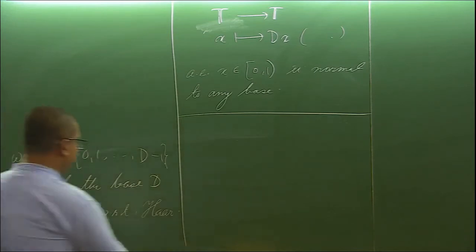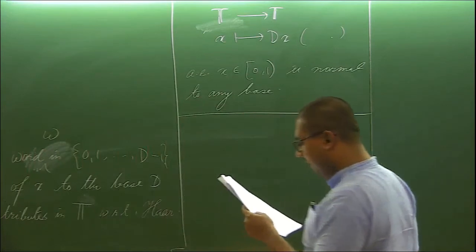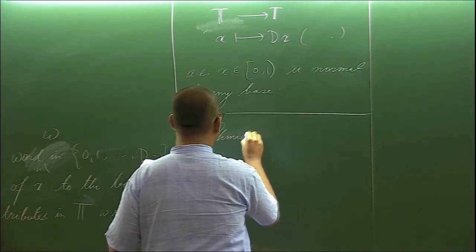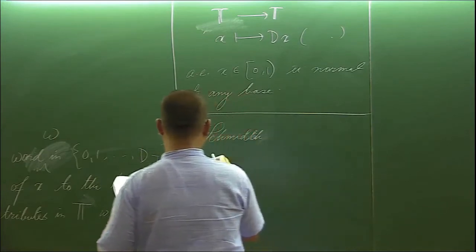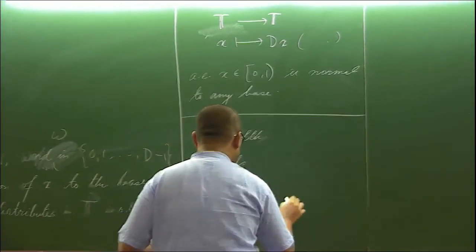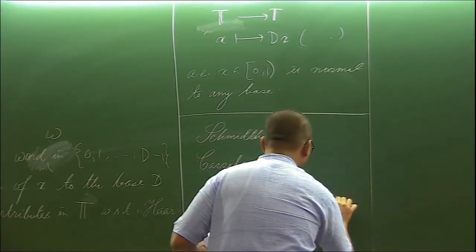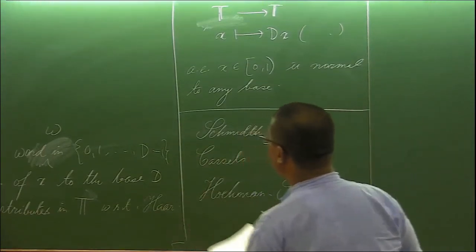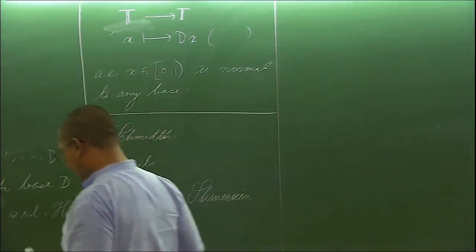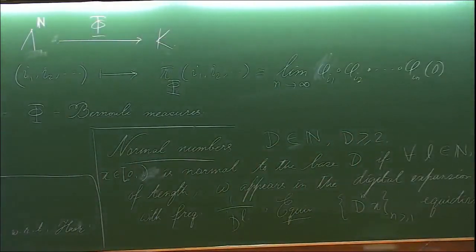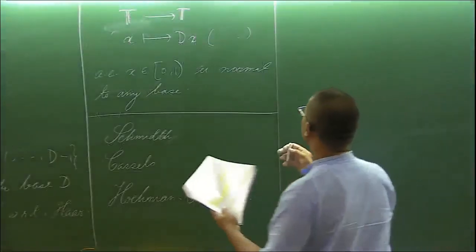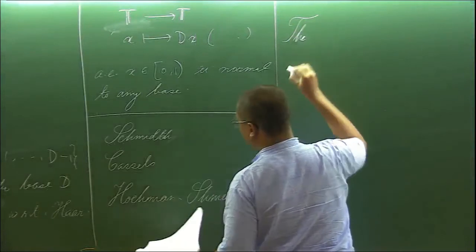The point of our interest is the following: in many cases with respect to many natural measures supported on the self-similar sets, it happens that almost every number belonging to that set becomes normal with respect to any given base. Of course, this is not the case everywhere because for example, if you take the usual Cantor's middle third set, then no number is normal with respect to base three.